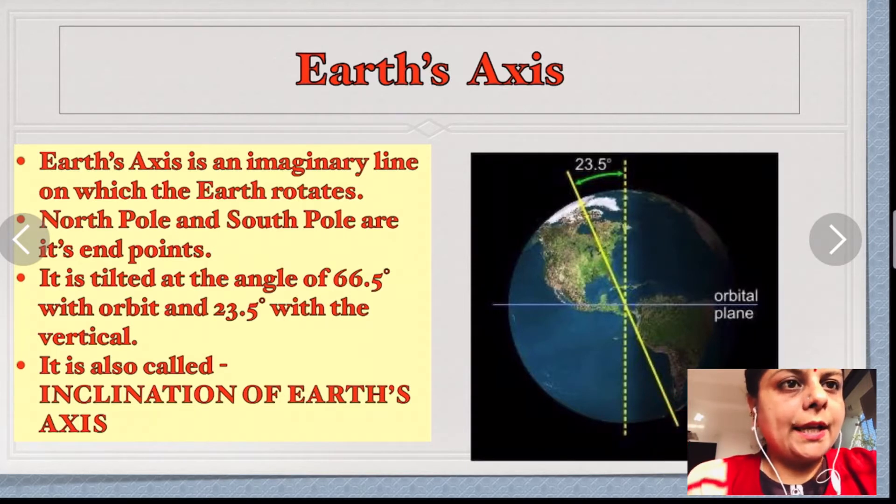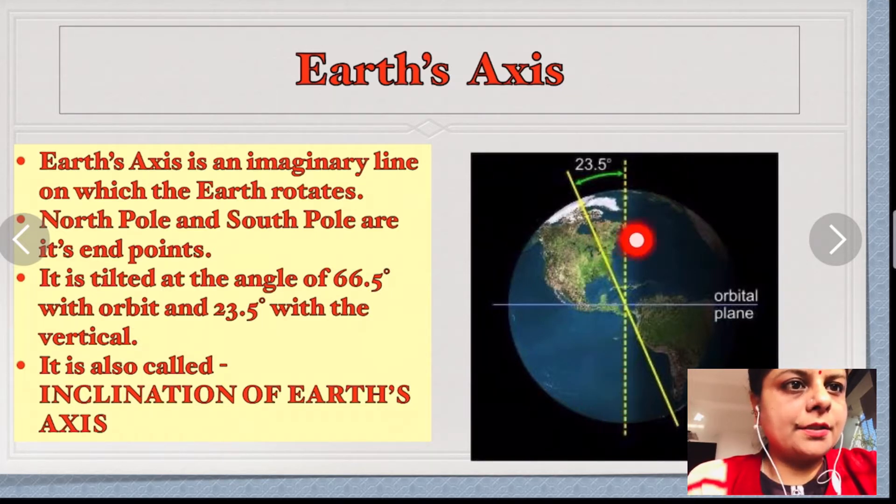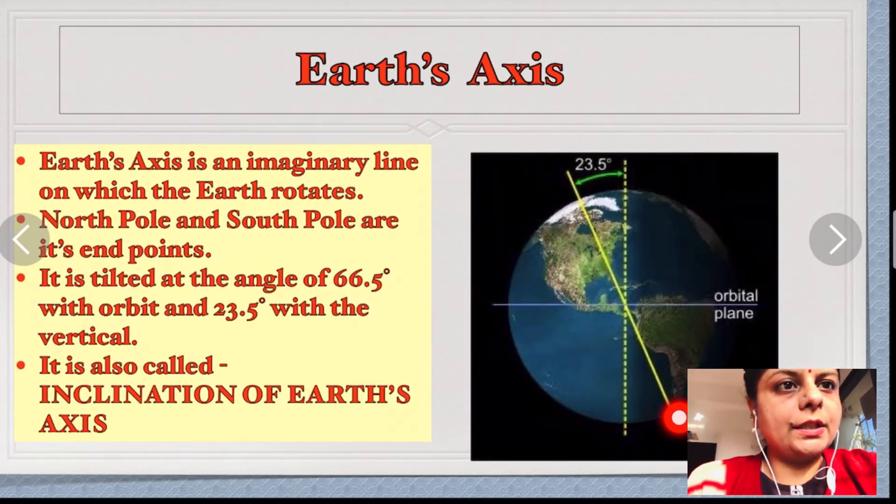It is tilted at the angle of 23.5° with the vertical line, and with the orbit it is making the remaining angle, which is 66.5°. This angle is known as inclination of Earth's axis. Inclination means tilted.